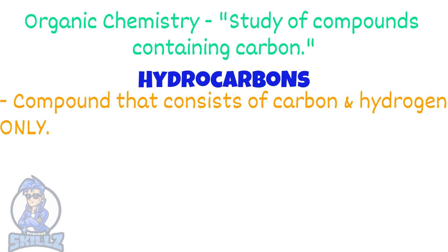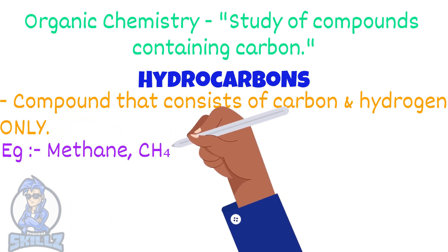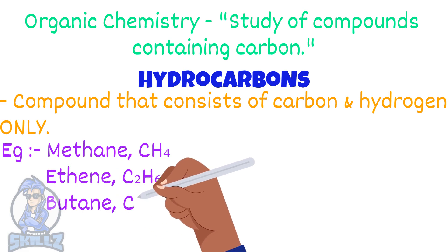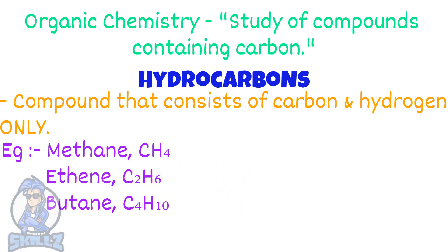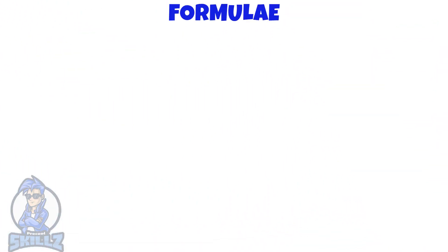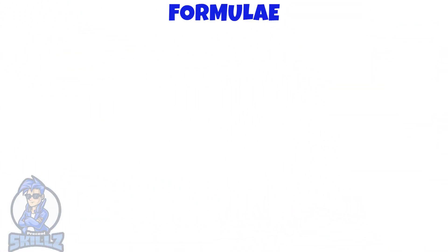Some examples include methane, ethene, butane, and so on. Now let's see how we show the formula for organic molecules. There are several ways to depict this formula.